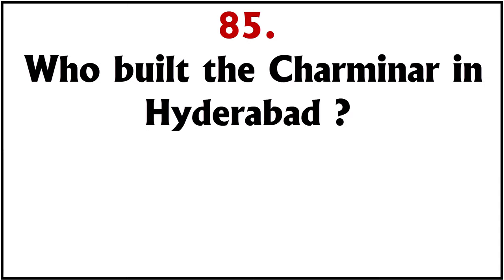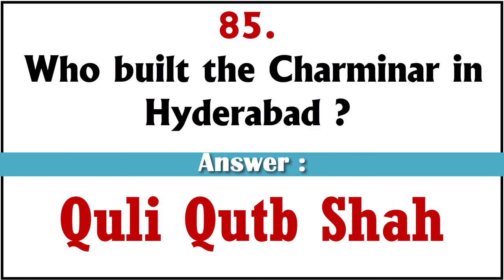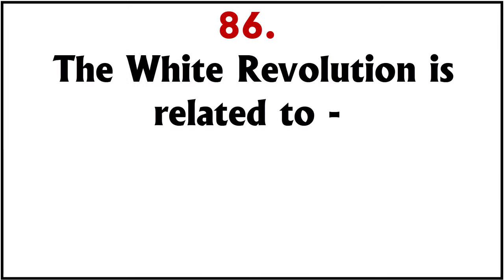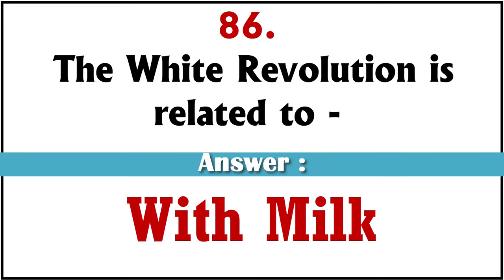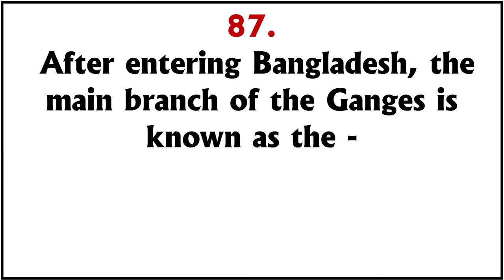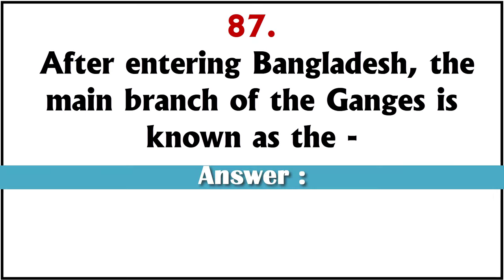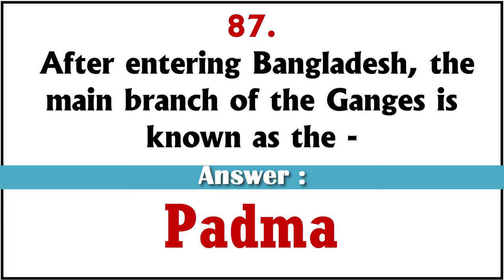Who built the Charminar in Hyderabad? Quli Qutb Shah. The White Revolution is related to? Milk. After entering Bangladesh, the main branch of the Ganges is known as? Padma.